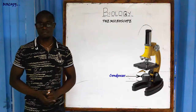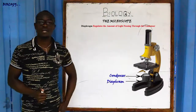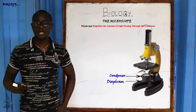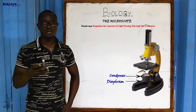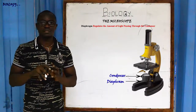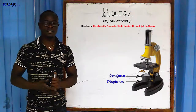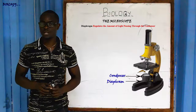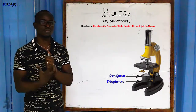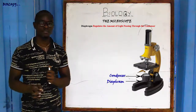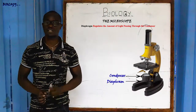Next we have the diaphragm. The function of the diaphragm is to regulate the amount of light passing through the specimen. If you look down the eyepiece and the specimen is not well lit, you can adjust the diaphragm to increase or decrease the amount of light passing through the specimen.